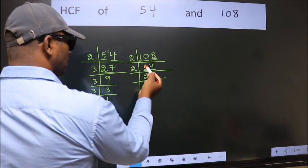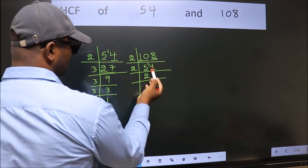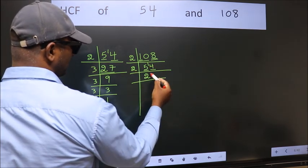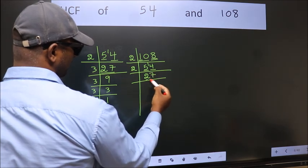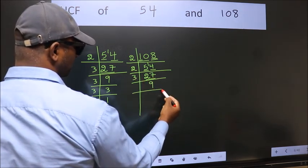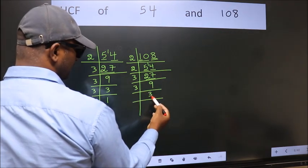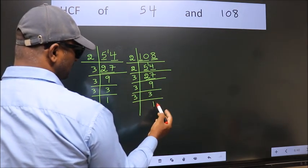5 minus 4, 1. 1 carried forward 14. When do we get 14 in 2 table? 2 sevens, 14. 27 is 3 nines, 27. 9 is 3 threes, 9. 3 is a prime number, so 3 once, 3.